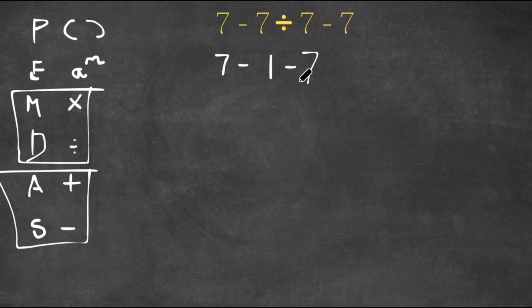And now I check for multiplication and division again—there is none. So now I go down to addition and subtraction, and as I see there is subtraction. 7 minus 1 and 1 minus 7, so I first do 7 minus 1, which is 6, minus 7. And 6 minus 7 is negative 1, so this is our answer.